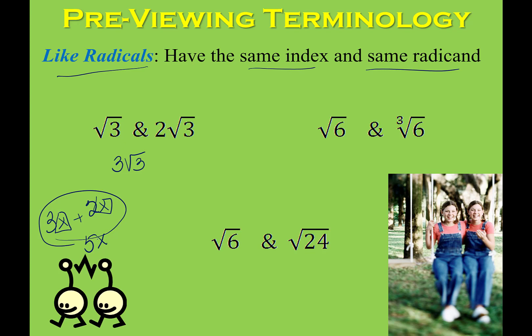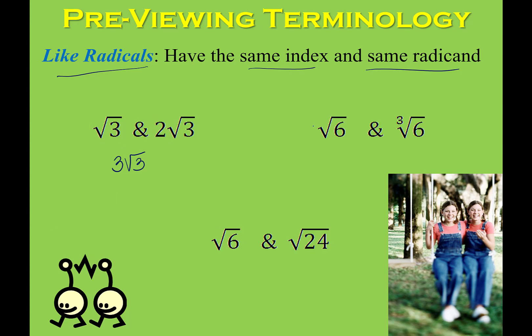When you add, you're only adding the factors on the outside — you're not adding or subtracting the pieces in the radicand. If you look at the second option with the 6s, you cannot add these together because one is a cubed root and one is a square root. You could write it as an addition problem, but you cannot combine them into one radical.